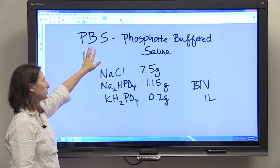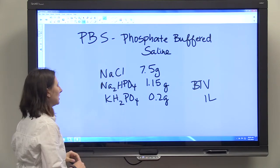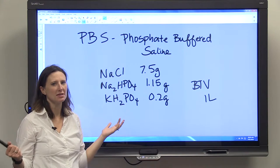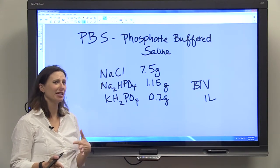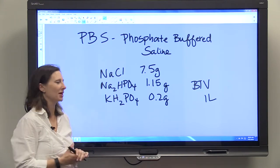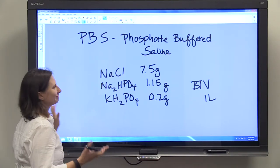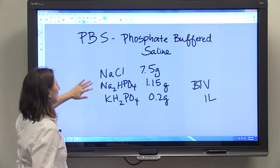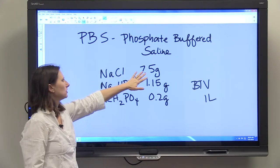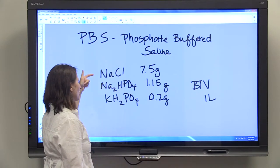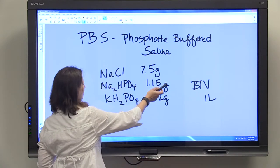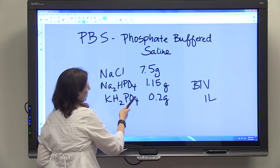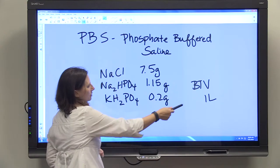Another example is oftentimes you'll have a solution called PBS, phosphate buffered saline. If you Google PBS phosphate buffered saline, you're going to see a lot of different solutions, different twists and turns about how people make a PBS solution. But if you're given these weights: 7.5 grams of sodium chloride, 1.15 grams of Na2HPO4, 0.2 grams of KH2PO4,